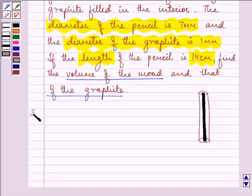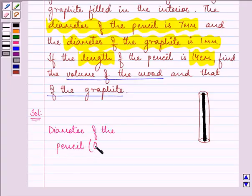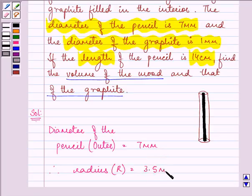We are given the diameter of the pencil, the outer diameter, as 7 mm. So the radius, capital R, will be equal to half of it, which is 3.5 mm.